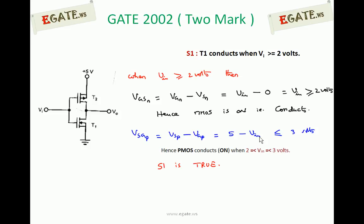For V input greater than 2 volts in the given diagram, NMOS conducts at any point, but PMOS conducts only conditionally. Statement 1 says T1 conducts when V input is greater than or equal to 2 volts — that is correct, so statement 1 is true. Whatever the input voltage, if it is equal to 2 volts or greater, NMOS always conducts, whereas PMOS conditionally conducts. Statement 1 says nothing about PMOS, so statement 1 is always true.